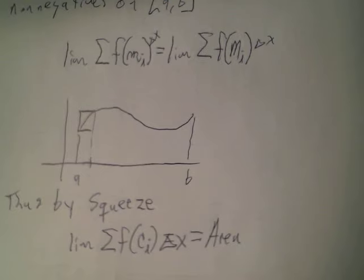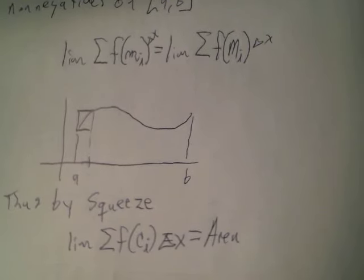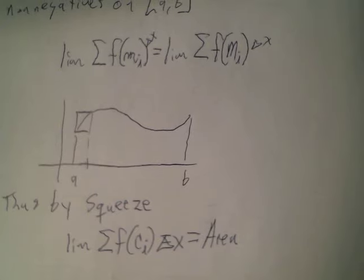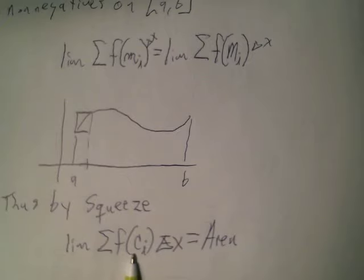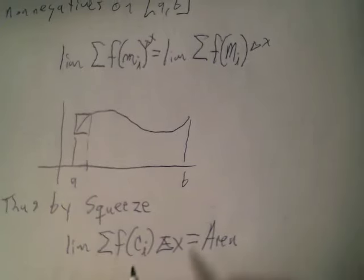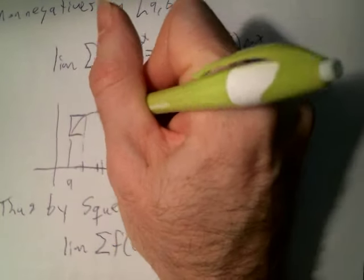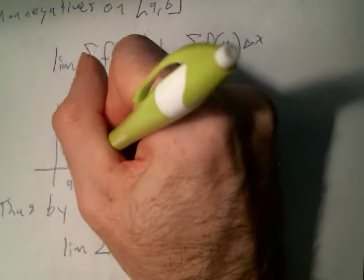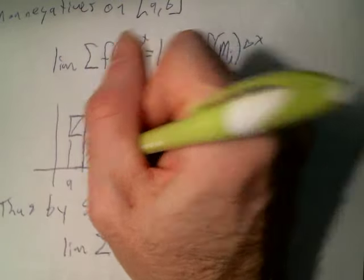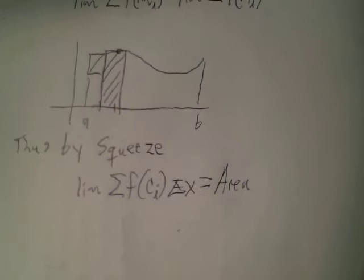So that limit equals the area underneath the curve as long as the function is well-behaved. We've generalized from left/right endpoints to any point in each sub-interval — you pick a point and form the rectangle off it as an approximator for that strip.